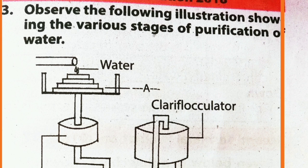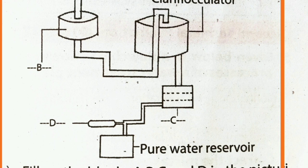The paper — the label — is a clarifloculator. Then A is the aerator, B, C, and D follow. This one will not be added. That is the pure water reservoir.